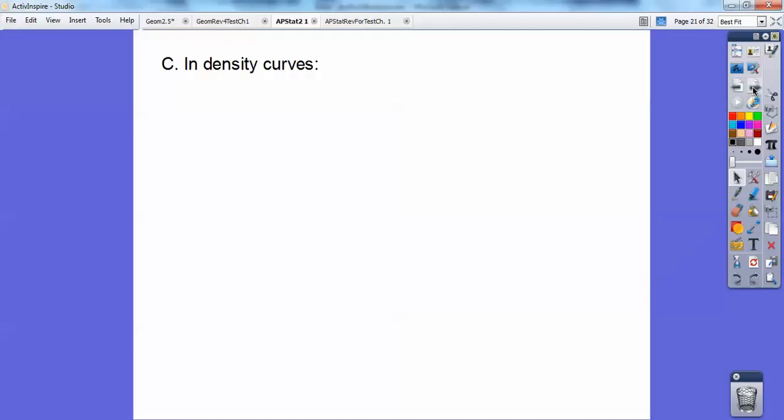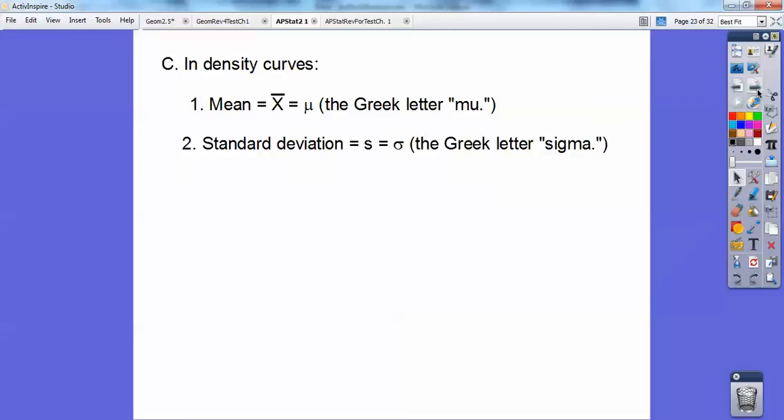And in density curves, the mean, which is x-bar we've been using, now we're going to start using the Greek letter mu. It's kind of got a funny little M sort of shape. You'll see how I write it in class. But it's the Greek letter mu. Standard deviation uses the Greek letter sigma.